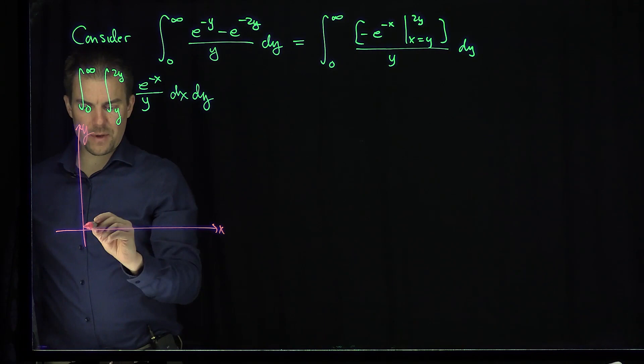What does our region look like? Our region looks like this. Here is the x-axis. Here is the y-axis.